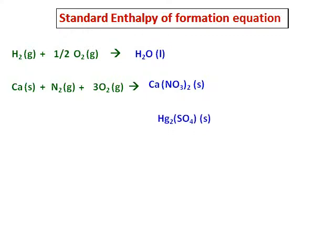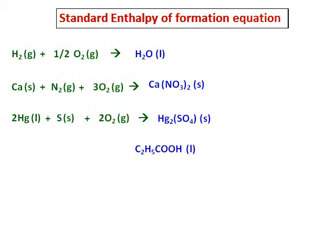The next example is Hg₂SO₄. Mercury's standard state is liquid. The other elements present are sulfur — whose standard state is rhombic sulfur, sometimes written simply as sulfur solid — and oxygen as O₂ gas. To balance the oxygen, we put two in front of O₂. This is the standard enthalpy of formation equation for Hg₂SO₄.